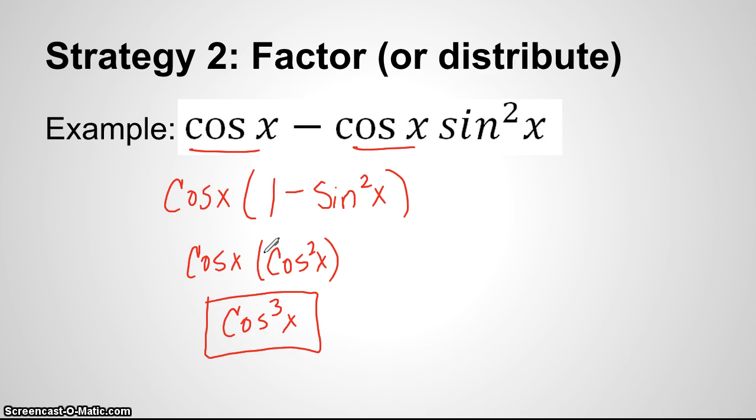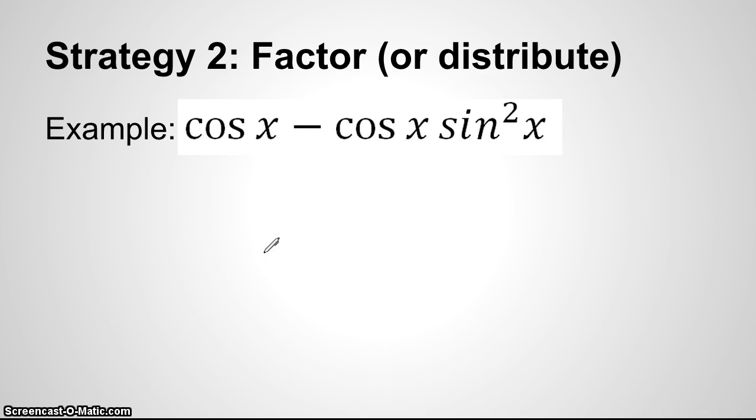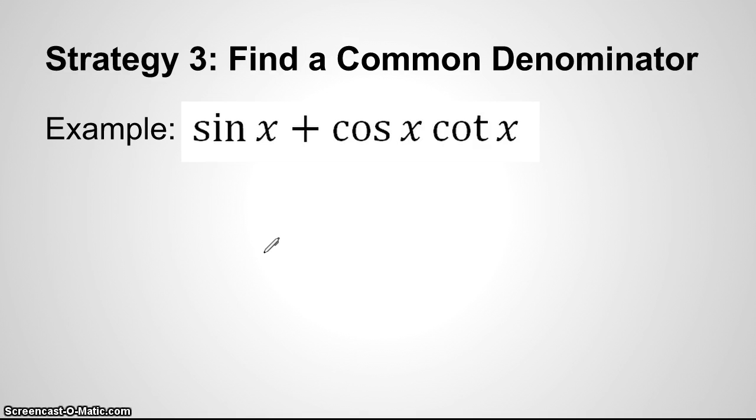Let's take a look at strategy number three. That is find a common denominator. Now, obviously we look at this one and we don't see any need for a common denominator. But we're going to use strategy one first, which I explained just a second ago that that's my first line of attack. So cotangent is cosine over sine. Then I'm going to put these two together here. So cosine and cosine is cosine squared and sine.